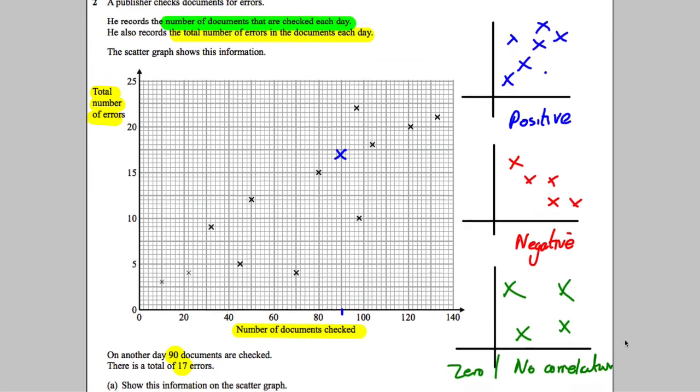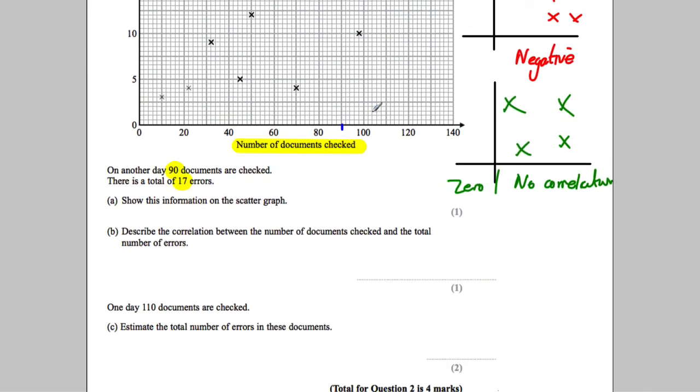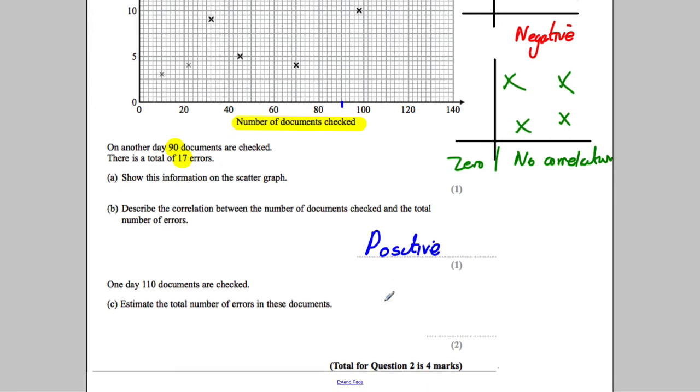Looking at that, it looks generally like quite a positive one. They're a bit spread out, but it's generally going up as you go from left to right. So the word you would say here to describe the correlation would be a positive correlation.